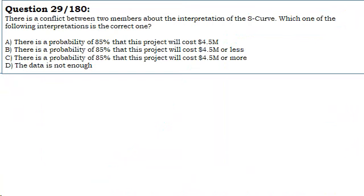Option C: There is a probability of 85% that this project will cost $4.5 million or more.